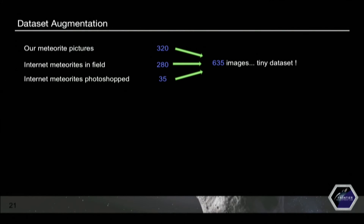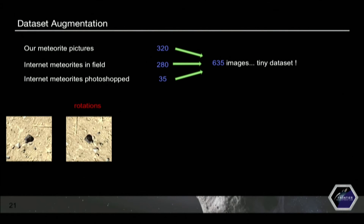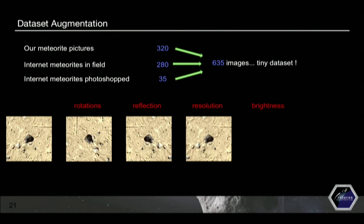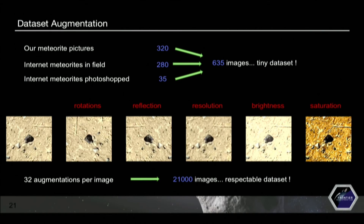To artificially increase the size of our dataset, we used data augmentation techniques. We could rotate a patch — rotating doesn't change the fact it's a meteorite, but to a computer it provides more information since it reads everything at a pixel level. We can also reflect the image, change the resolution, brightness, and saturation levels. Applying random combinations of these transformations — 32 augmentations per image — we created a much bigger dataset of roughly 21,000 images, which is much more respectable.